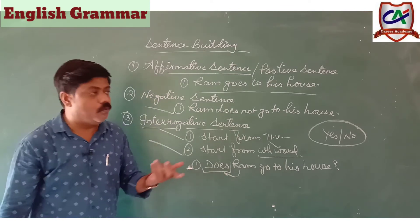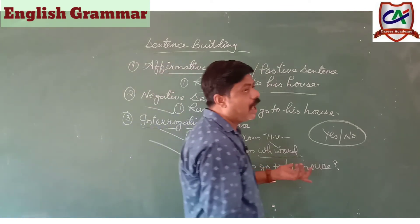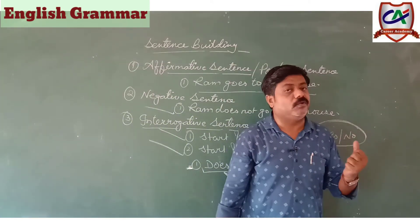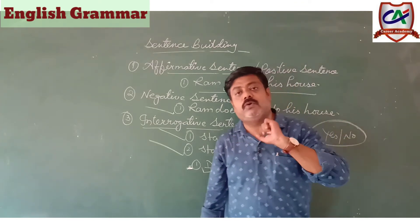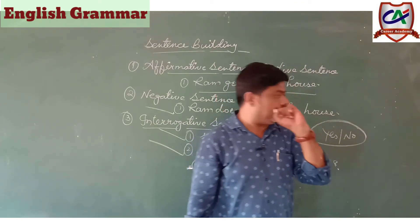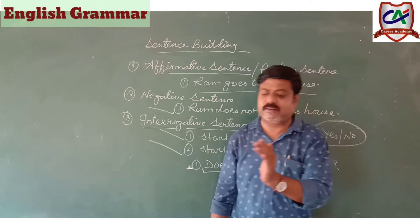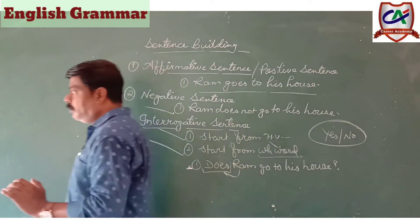WH words include: where, how, how many, how much, how long, how far — these are the WH words with different usages. These form the second type of interrogative questions — we call them WH questions.